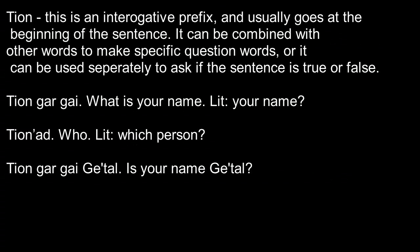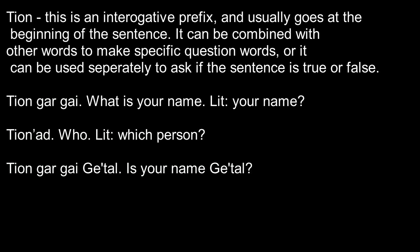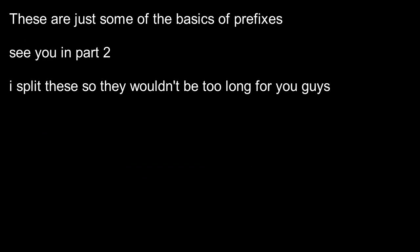Teyon is the interrogative prefix, and it usually goes at the beginning of the sentence. It can be combined with other words to make specific question words, or used separately to ask if a sentence is true or false. For example, teyon gargai means 'what's your name?' — literally 'your name, question.' Teyon ad is a combined word meaning 'which person,' used as 'who.' You can also state a fact and put teyon before it as a question — for example, gargai getal means 'your name is Getal,' and putting teyon before it asks 'is your name Getal?' Those are some of the basic prefixes — there are more, but we're not covering them right now.